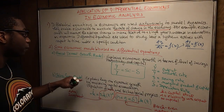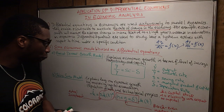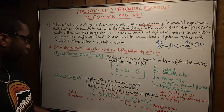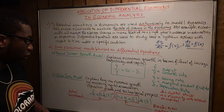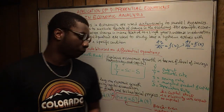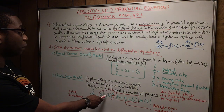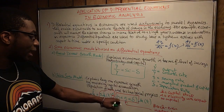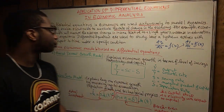The Solow-Swan model explains long-run economic growth by considering capital accumulation, population growth, and technological progress. In the equation, K is the capital stock, and delta is elasticity with respect to capital. S times capital(t) to the power delta represents actual investment minus (n plus g plus delta) times capital(t), which is the break-even investment.